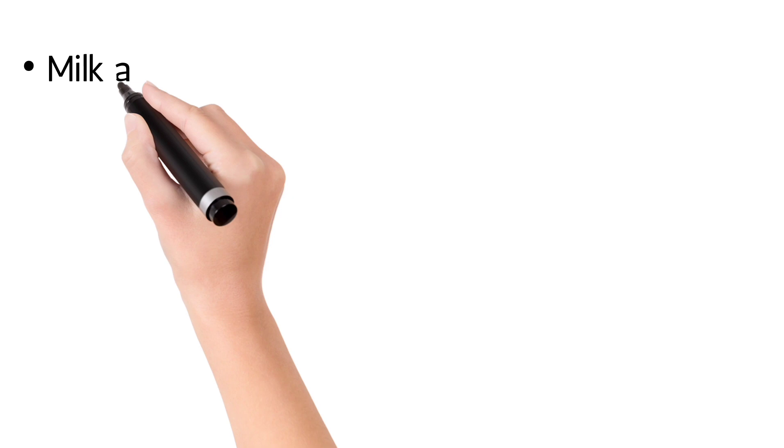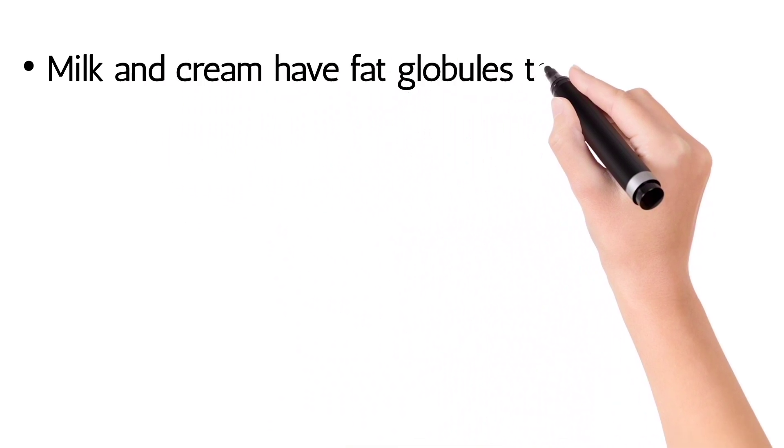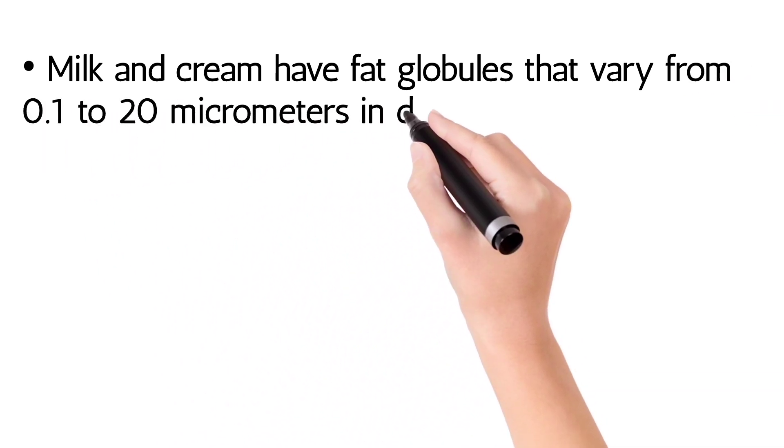Milk and cream have fat globules that vary from 0.1 to 20 micrometers in diameter.